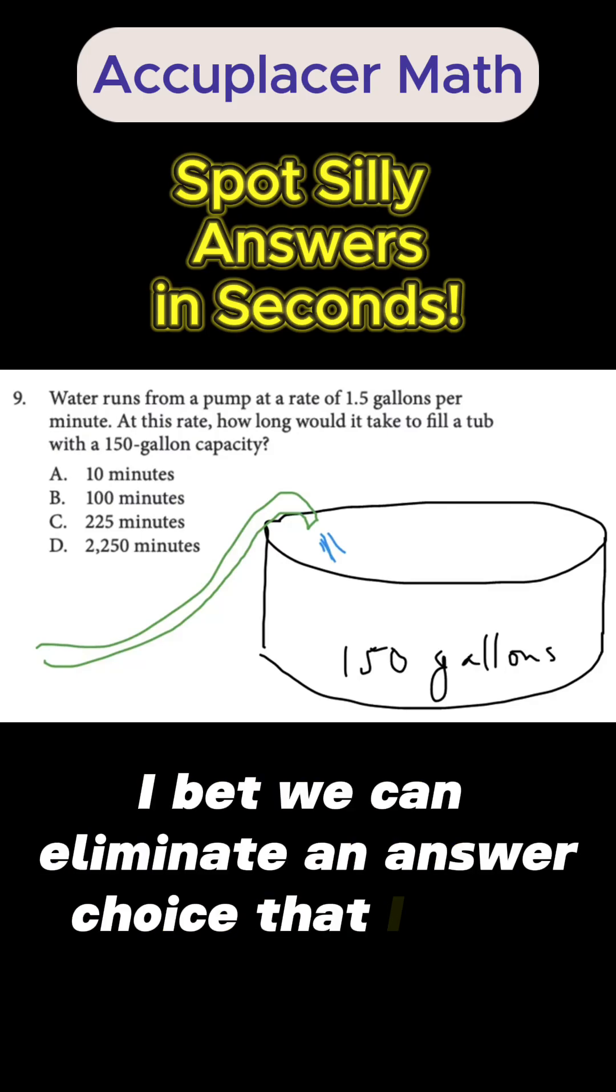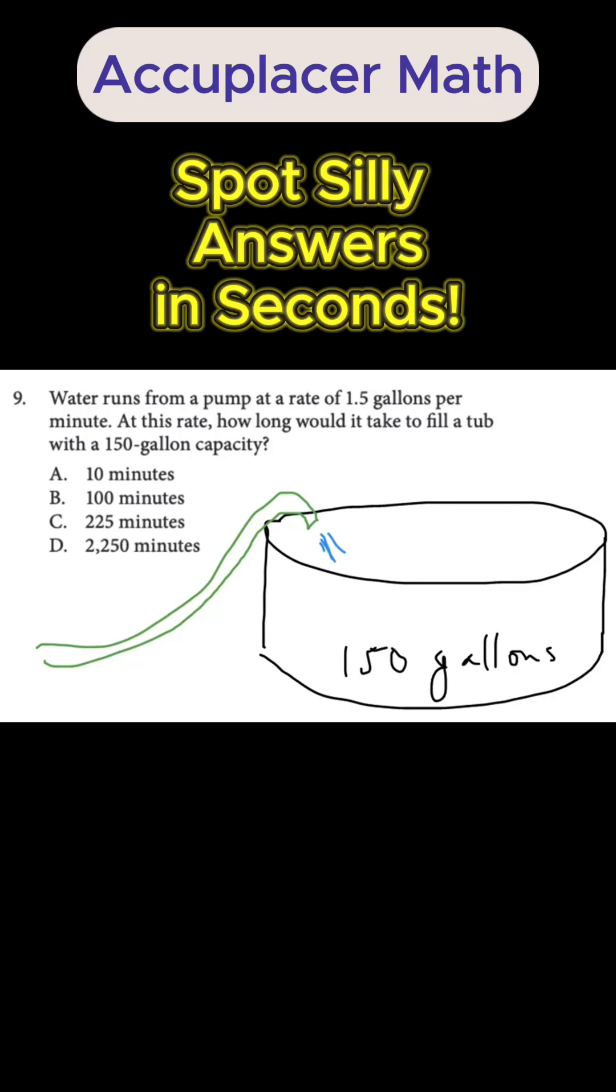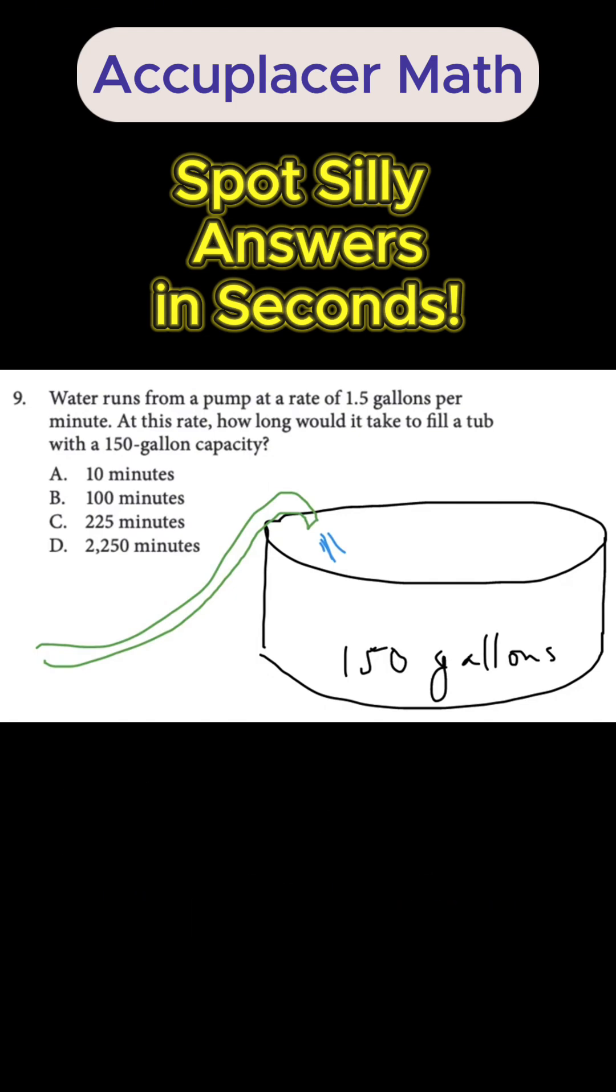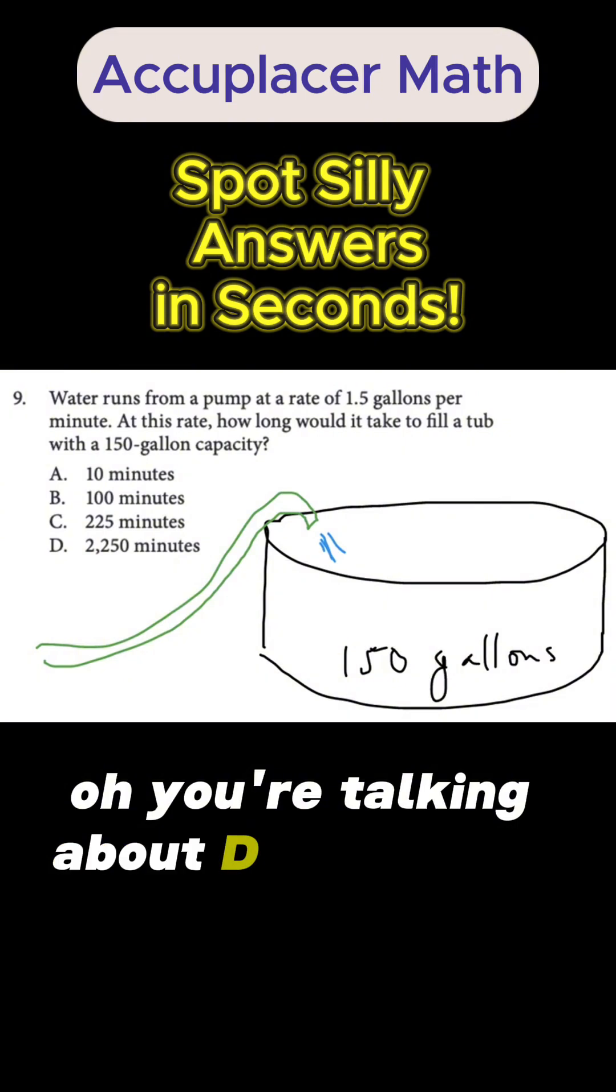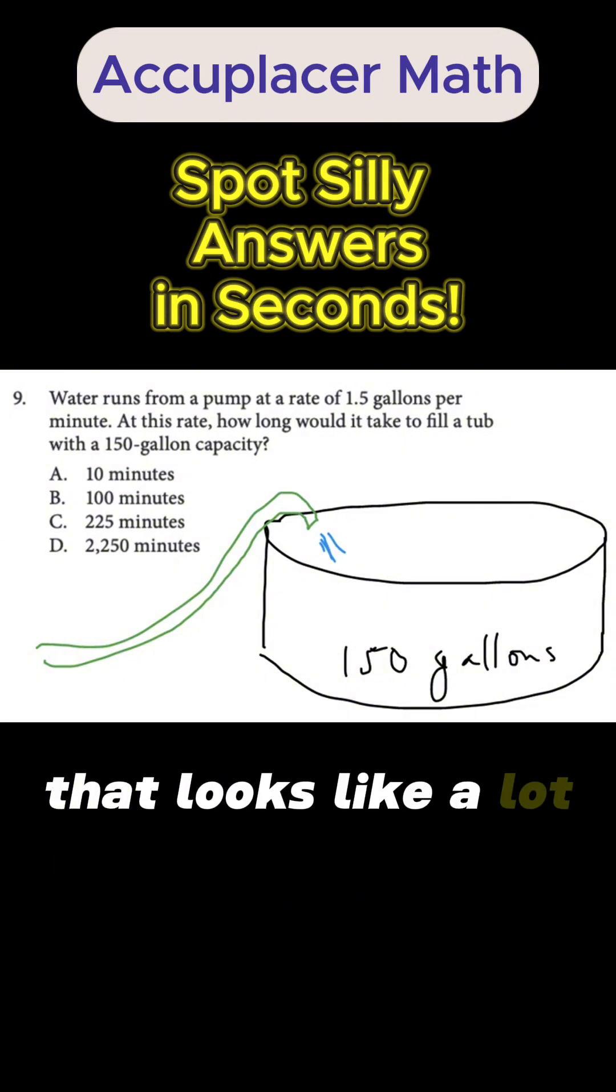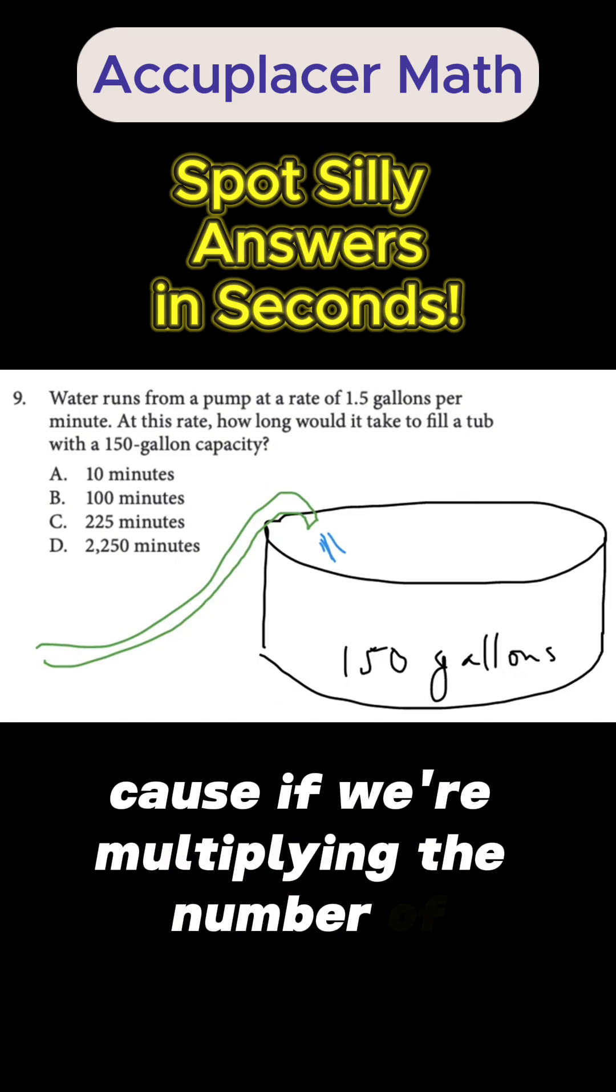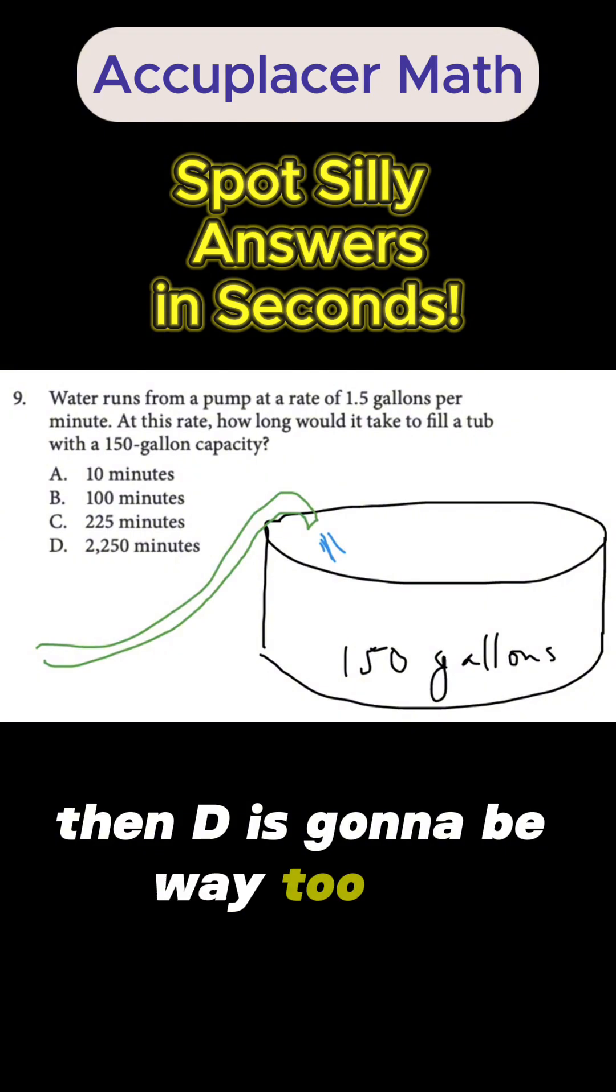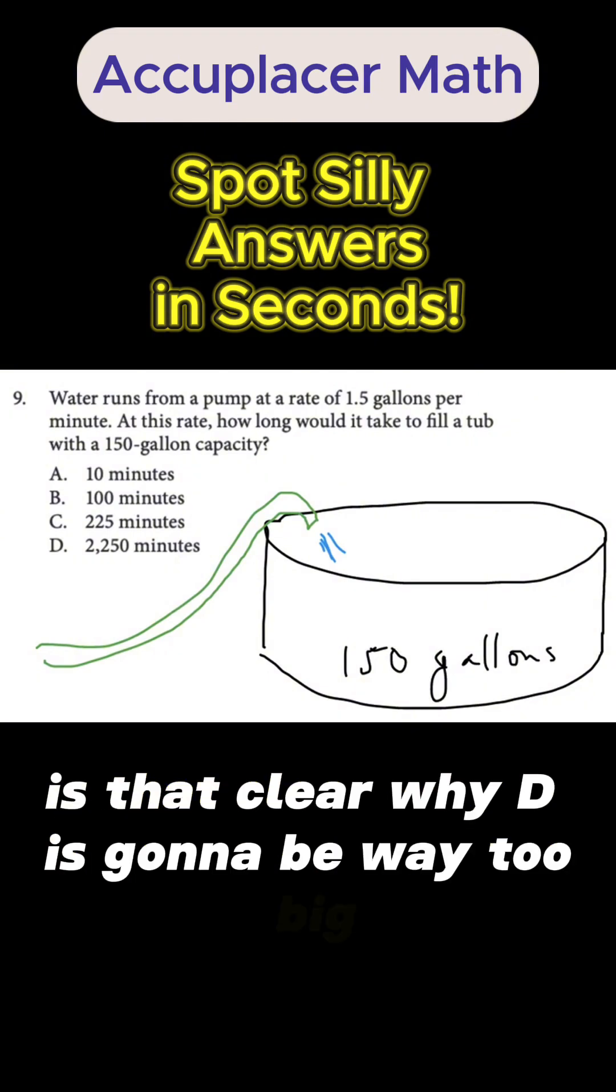I'll bet we can eliminate an answer choice. I know there's not gonna be enough time to fill that thing up. You're talking about D? Well, that looks like a lot, right, because if we're multiplying the number of gallons by the number of minutes, which we said we are, then D is gonna be way too big. Is that clear why D is gonna be way too big?